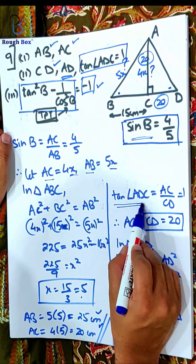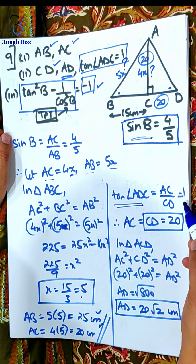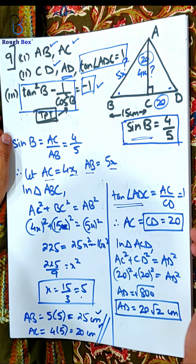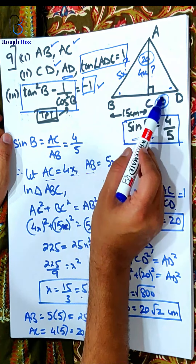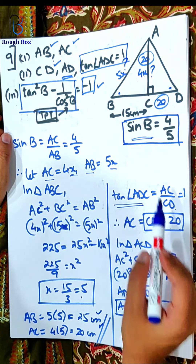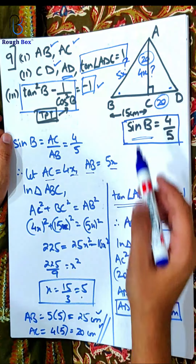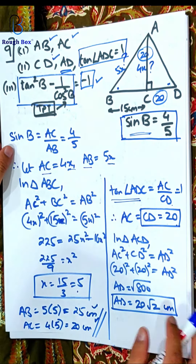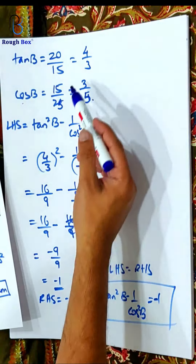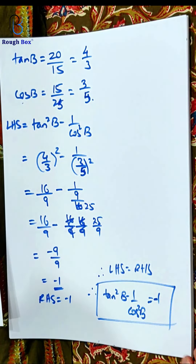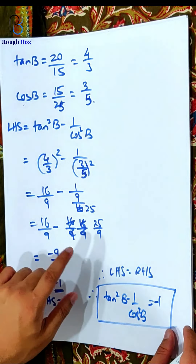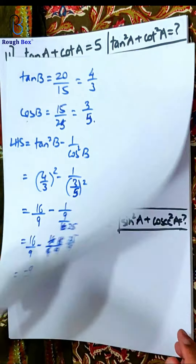So in sum 9, first we used sin B to get AC and AB in terms of x, applied Pythagoras to get x, and resubstituted. Then we used tan angle ADC to find that AC equals CD equals 20 — which very rarely clicks to people. Then applied Pythagoras to get AD. And finally evaluated the expression. That's a lovely question — you must take this sum seriously.